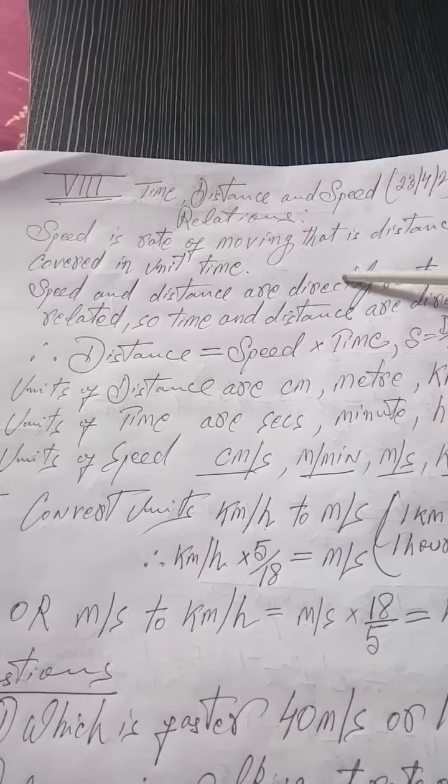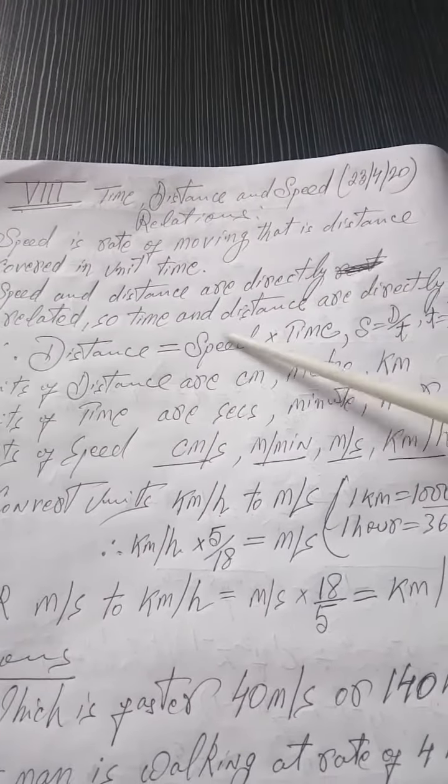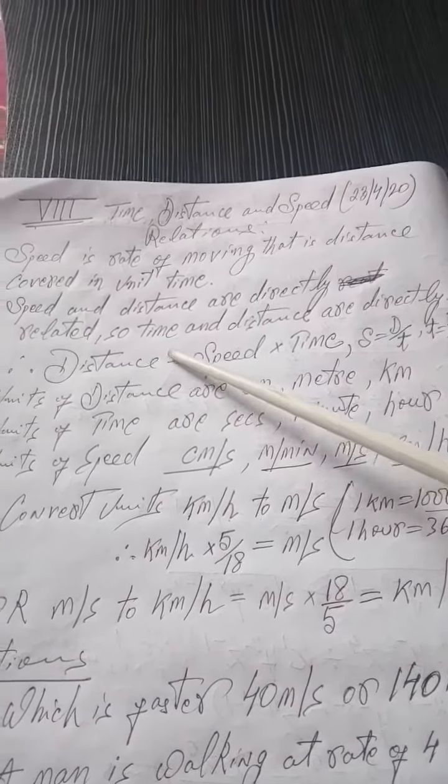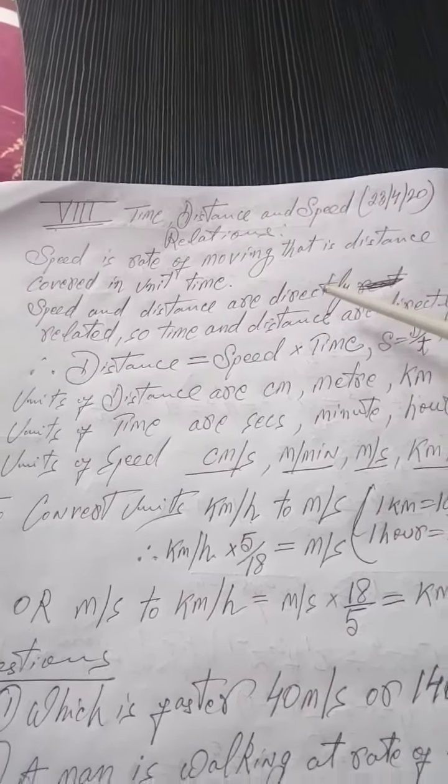Speed and distance are directly related. Similarly, time and distance are directly related. More speed, more distance covered. Less time, less distance covered.